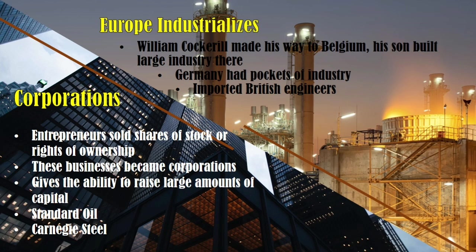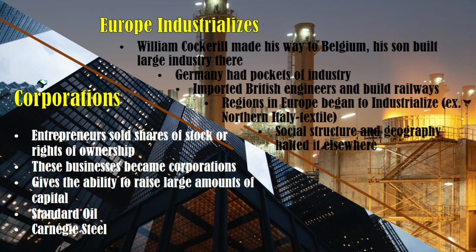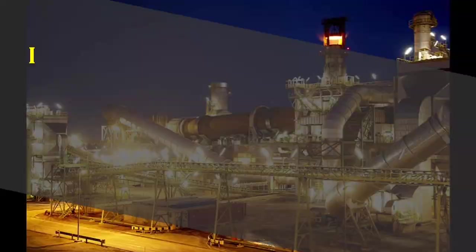At the same time, Europe industrialized. William Cockerell made his way to Belgium, and his son built large industrial textiles there. Germany had pockets of industry because of imported British engineers who built railways. Regions in Europe began to industrialize — for example, Northern Italy's textile industry. However, social structure and geography halted industrialization elsewhere.